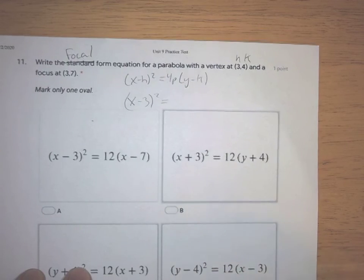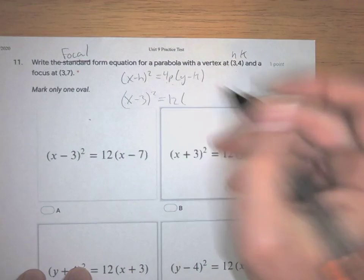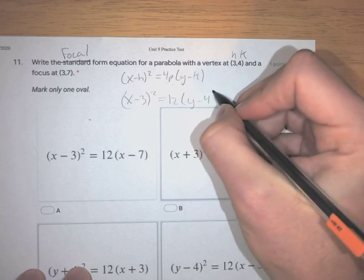Okay, so this is between the vertex and the focus is 3. So this is 4 times 3, and then (y - k). Okay? So that's the one we're looking for.